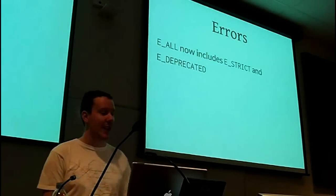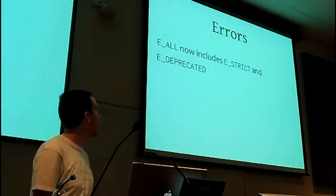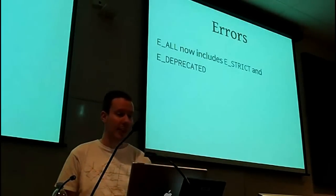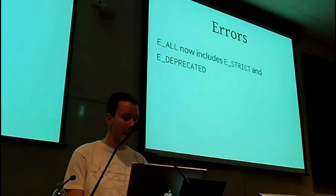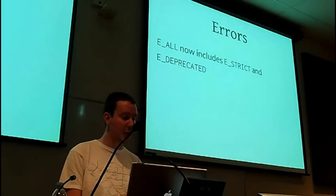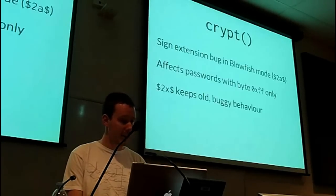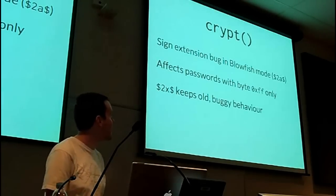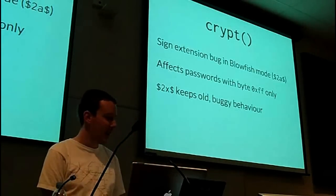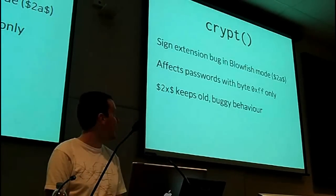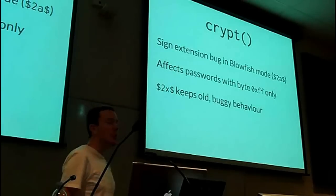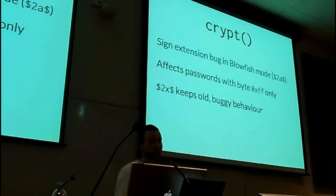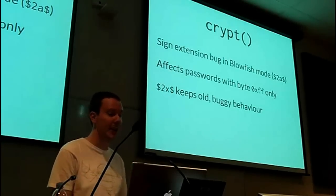E_ALL, the error level, now finally actually is all again. Somewhere along the line it diverged and didn't include strict — it included deprecated in 5.3 but definitely didn't include strict. It now includes strict as well. This is a good thing and you should be developing with E_ALL on. Crypt has a minor backward-incompatible change for users who have passwords with byte 255 in them. In practice, since UTF-8 doesn't even have that as a valid byte, you probably won't run into this — but if you desperately need the old behaviour, you can use 2x as the prefix instead of 2a.